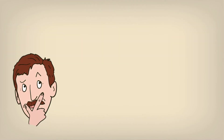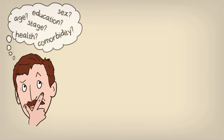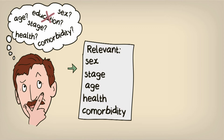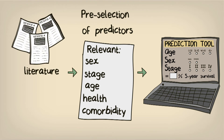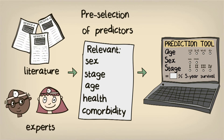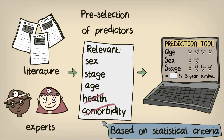A frequent problem that researchers come across while developing a prognostic model is the issue of which predictors they should include in their model. As mentioned in a previous lecture, it is essential that you make some kind of choice during the design phase of your study, so that you only collect relevant information. You might not wish to include all of that information in your prediction rule, as some may still not be relevant, and there may be practical reasons for excluding some predictors. The ideal way to do this is by making a pre-selection of predictors based on evidence from the literature or experts in the subject. The next approach is to use selection techniques based on statistical criteria.